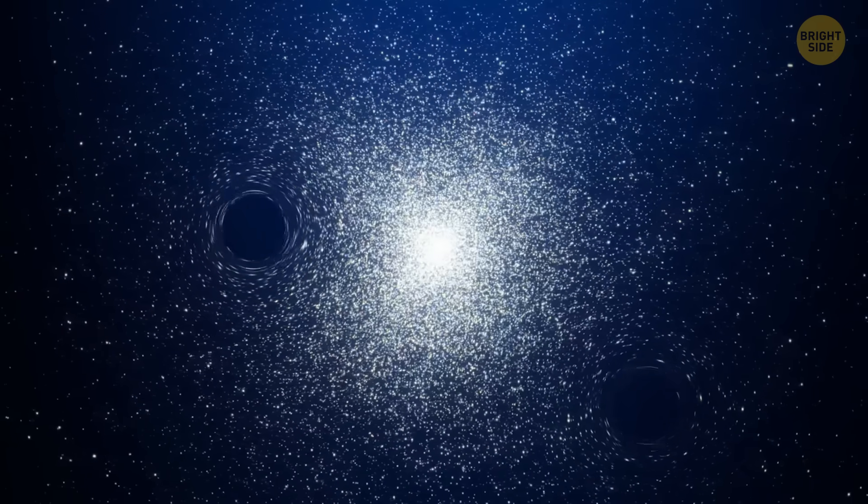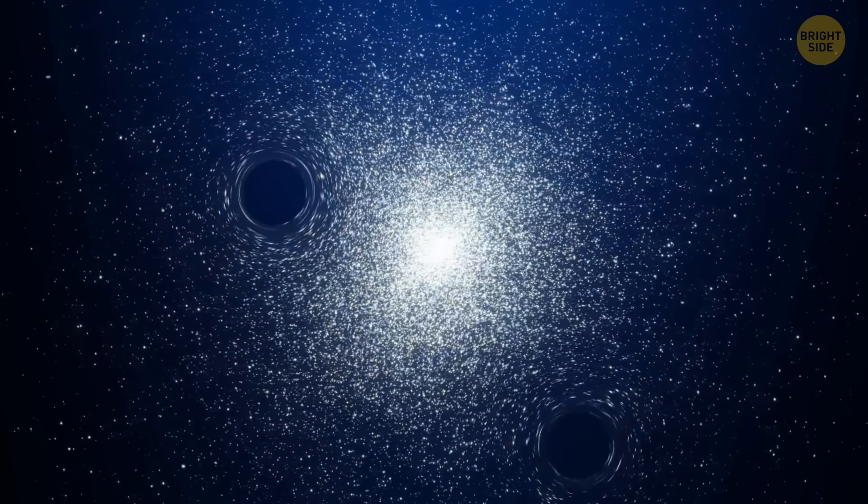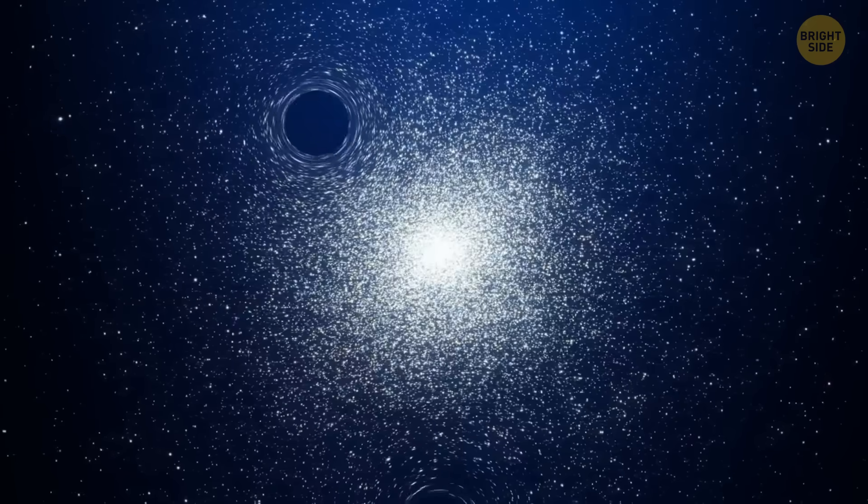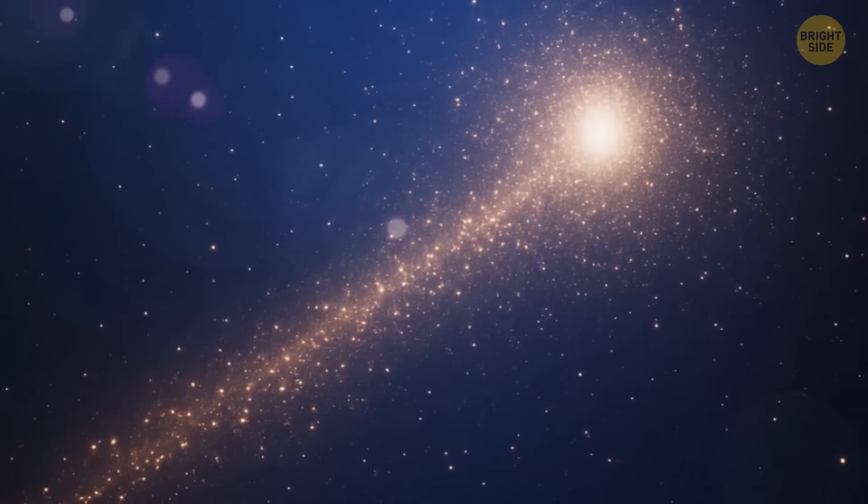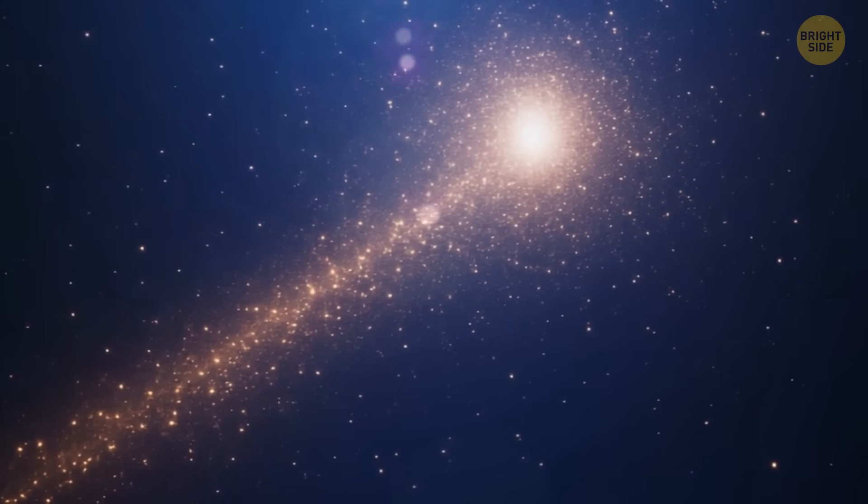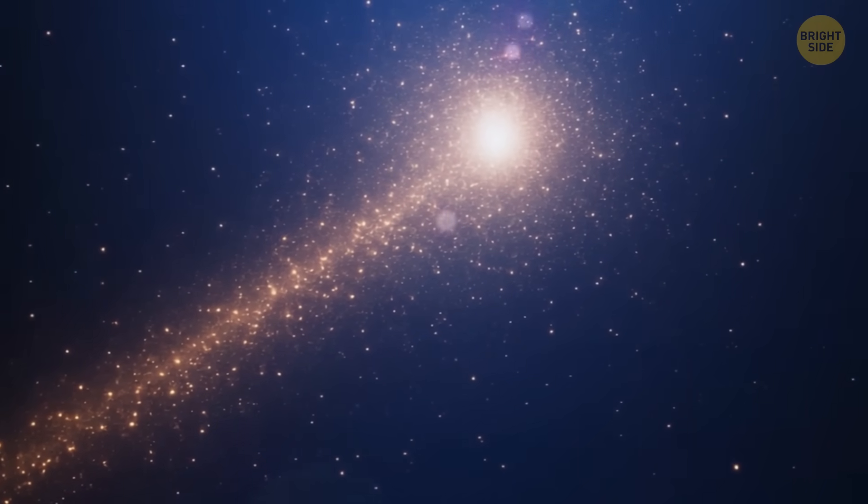They're pulling on the stars in the cluster, messing with their orbits, and slingshotting them right out of the cluster. These stars are what make up the tidal stream. Over time, more and more stars get flung out.